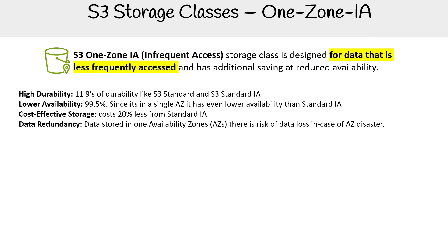So if there was a disaster in that AZ, you lose all your data. You might want to do cross-region replication if the data is super important to you. But then again, you're kind of getting into the territory of Standard-IA, where it's going to be in multiple AZs — but in another region, of course, that'd be a bit different.